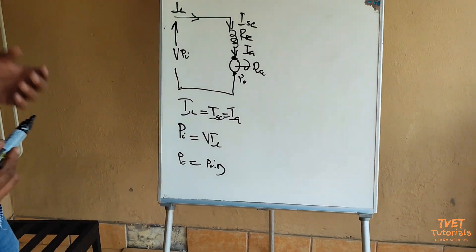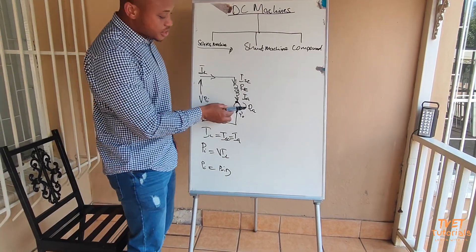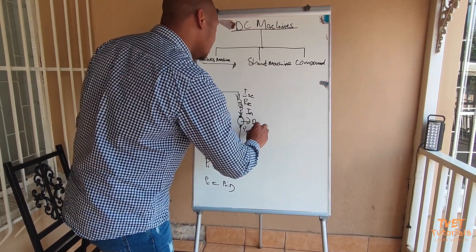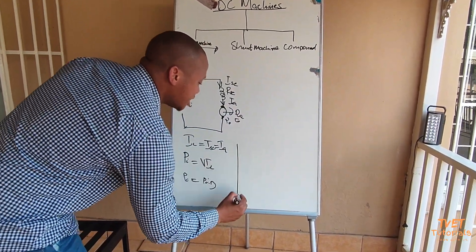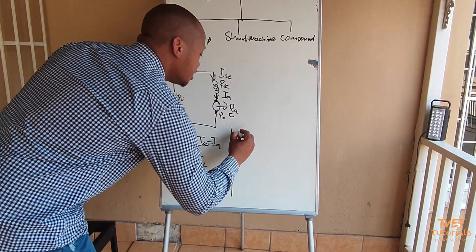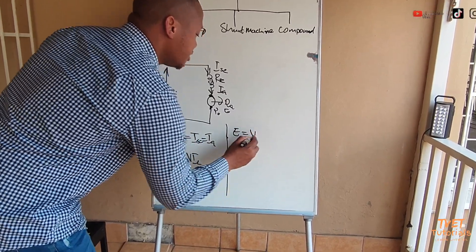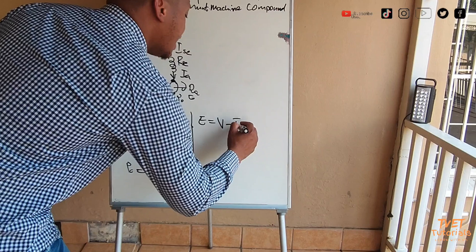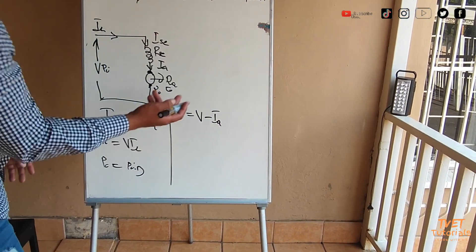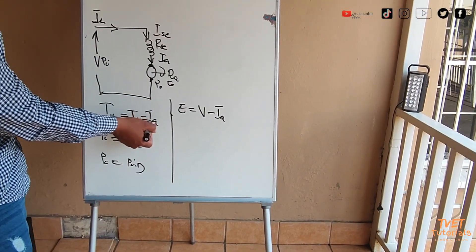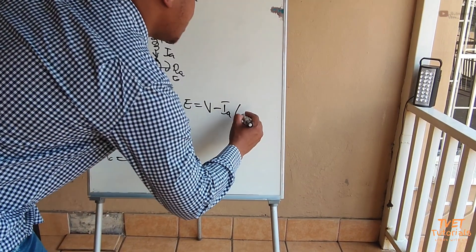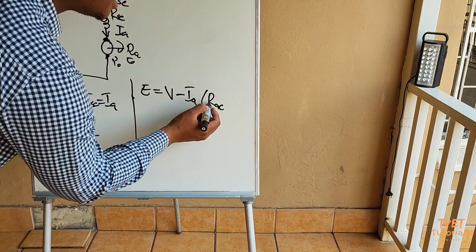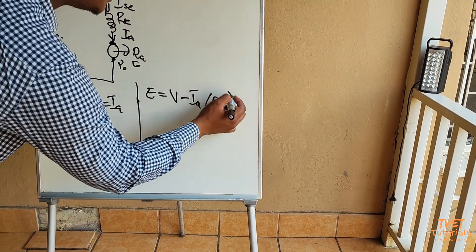As this machine operates you will get an EMF, a voltage which is the EMF, and that value is calculated according to this equation: E is equal to V which is the supply voltage minus IA, which is basically equal to ISE which is equal to IL, multiplied by RAC where this is the armature circuit resistance.